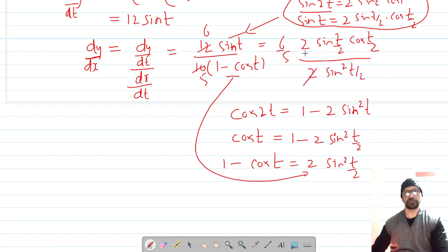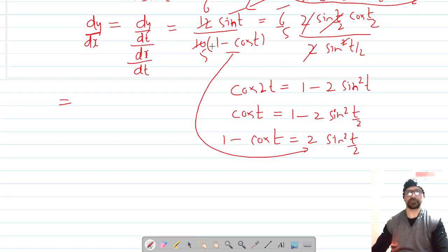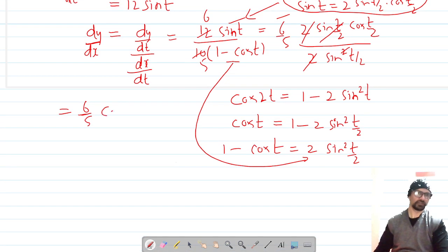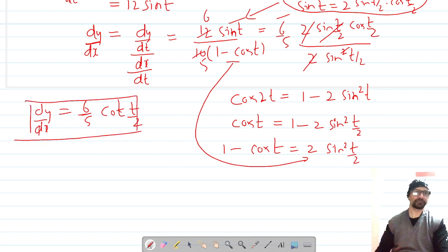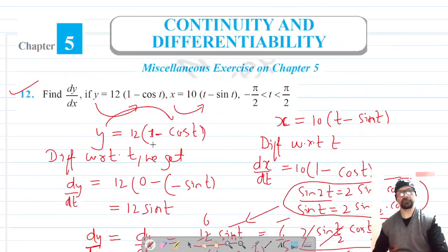Substituting back, the 2 sin(t/2) terms cancel, and we get dy/dx = (6/5) × cos(t/2)/sin(t/2), which equals (6/5) cot(t/2). This is the final derivative. Please like, share, and subscribe. Thank you for watching.